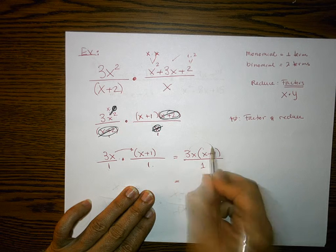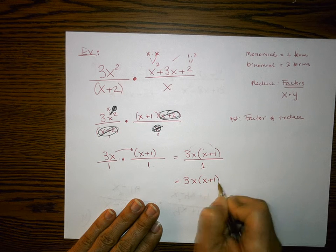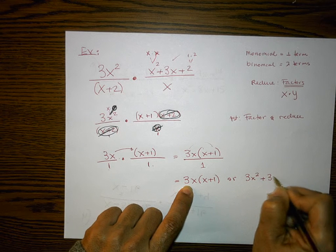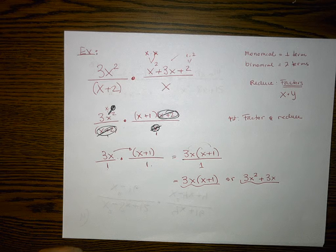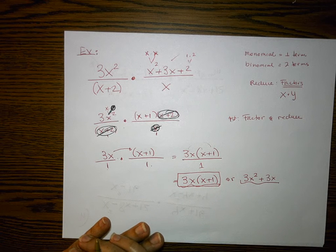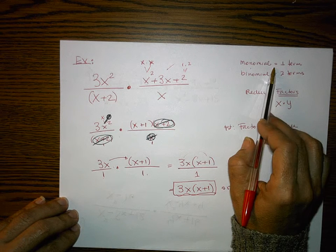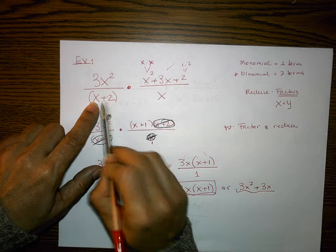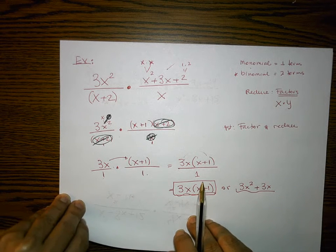It's not necessary to write 'over 1.' Some students like to distribute using the distributive property to get 3x² + 3x, but leaving it as 3x(x+1) is perfectly acceptable — both are equivalent. I prefer leaving it in factored form. The steps are always the same: check monomials and binomials carefully, reduce only common factors, then multiply straight across.